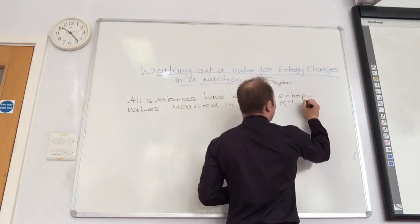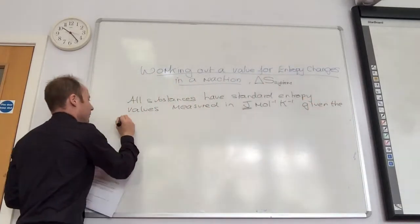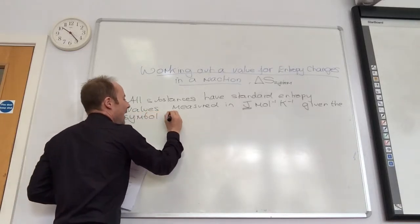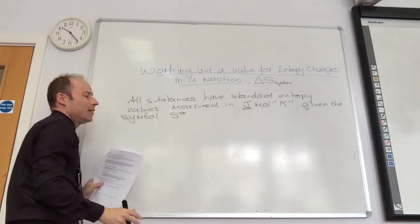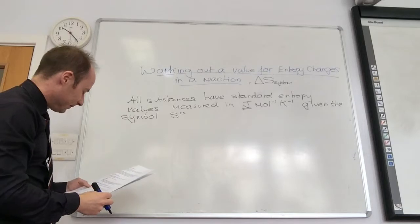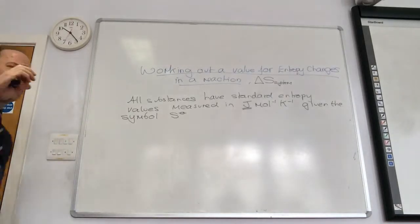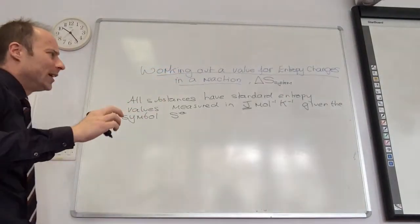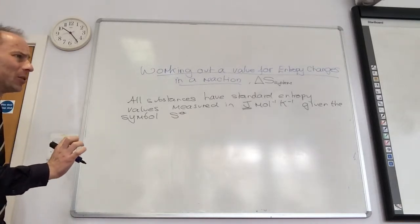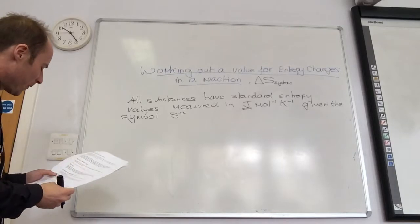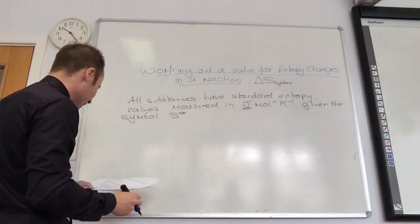This is given the symbol S with the standard symbol. The way we define it: a perfect crystalline solid at zero kelvin would have an entropy of zero. Most things have a value set for them, so let's look at some values.